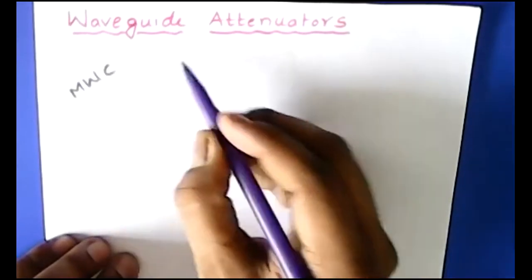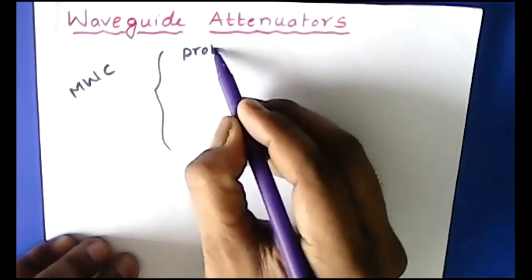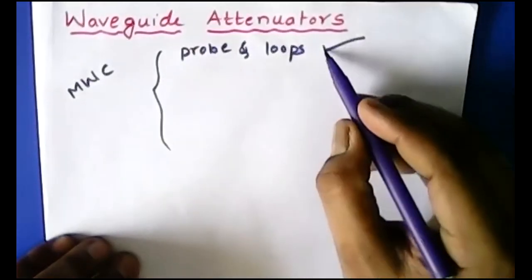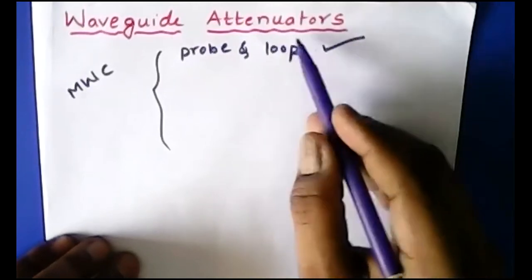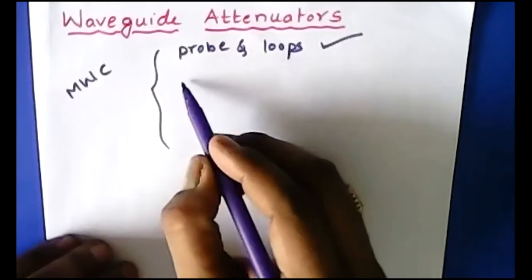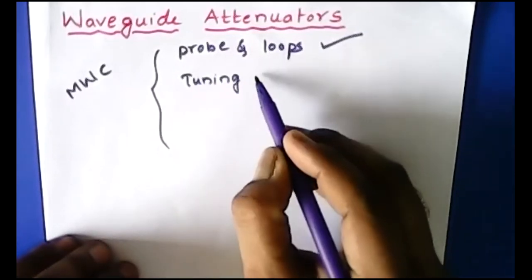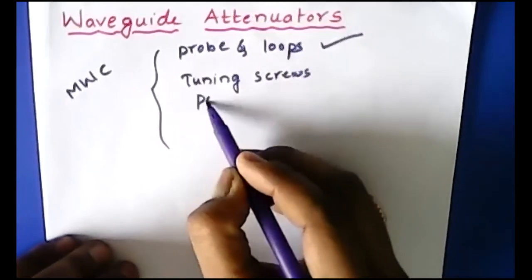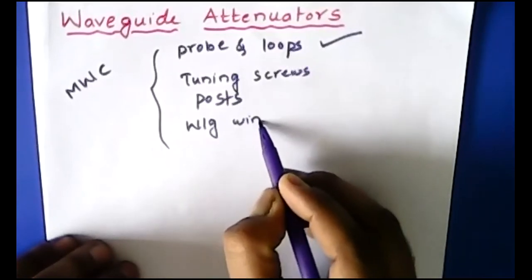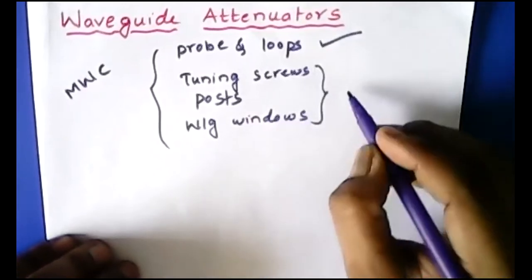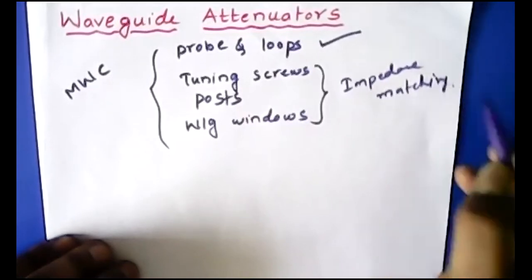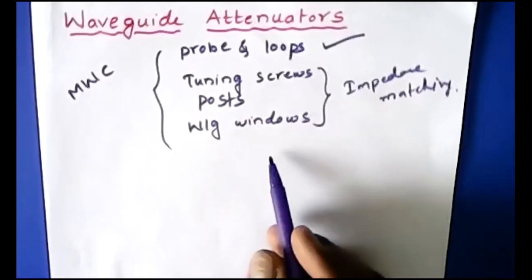We discussed probes and loops, which are used for excitation of signals into the waveguide. After that we covered tuning screws, posts, and waveguide windows. These three microwave components were discussed for the purpose of impedance matching, and those are the topics covered in the second unit.